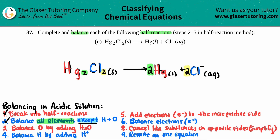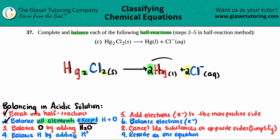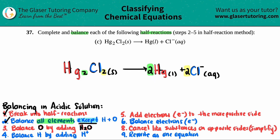The next step is to check for oxygens. You balance oxygen by always adding water, H2O — the oxygen you're balancing is the O in water. But looking here, I have no oxygens on the left and no oxygens on the right, so it's totally okay to skip steps. Since I don't have any oxygen, I'm going to skip over step number three.